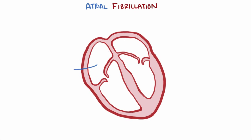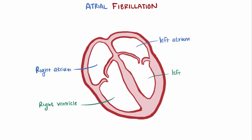The heart has four chambers: two upper chambers, the right and the left atrium, and two lower chambers, the right and the left ventricles. Fibrillation describes when the muscle fibers are all contracting at different times, so the end result is this quivering or twitching movement.